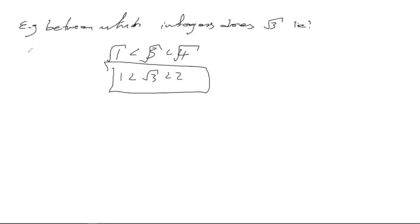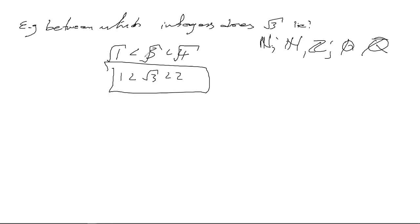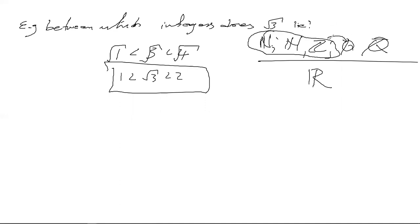All the numbers we've spoken about — natural numbers, whole numbers, integers, rationals, and irrationals — we classify them all as real numbers. The integers and whole numbers are themselves rationals, so they're a subset. We can define the real number space as the set of all rationals and irrationals.